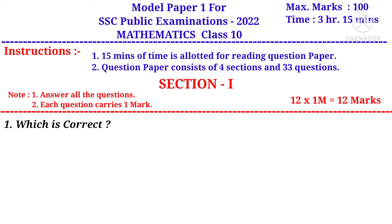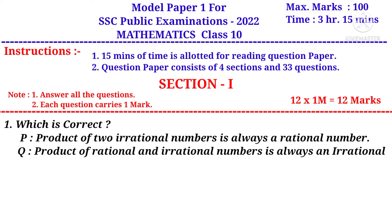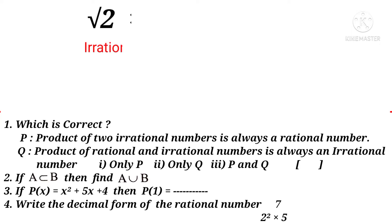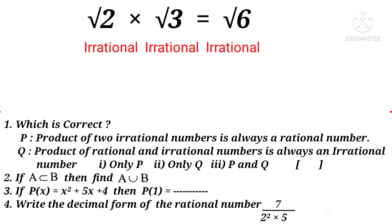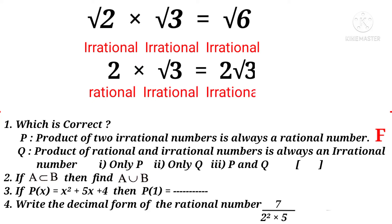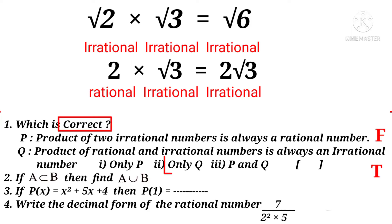Question 1: Which is correct? Statement P says the product of 2 irrational numbers is always a rational number. For example, root 2 (irrational) into root 3 (irrational) gives root 6, which is also irrational, so statement P is false. Statement Q says 2 is rational and root 3 is irrational; their product 2 into root 3 is irrational — so statement Q is true. The correct choice is 2.